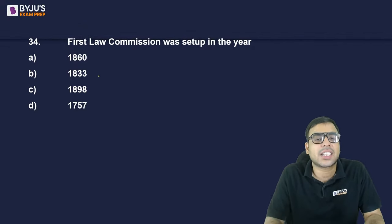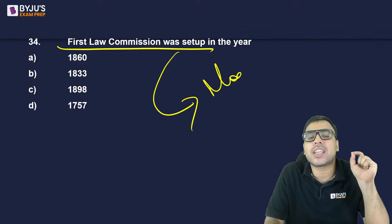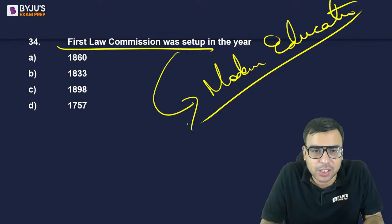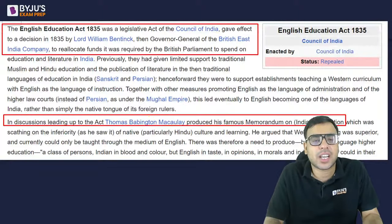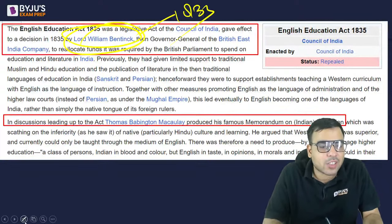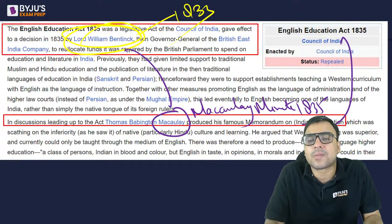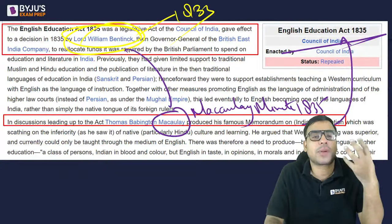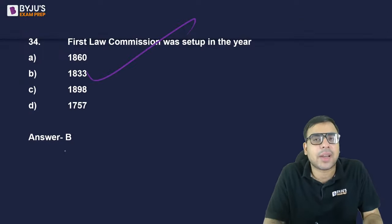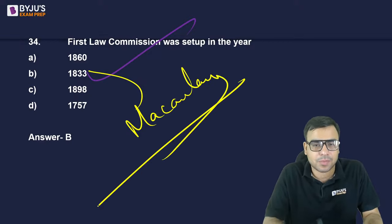The first law commission was set up in which year? 1860, 1833, 1898, or 1757? This was asked in a twist form — modern education in India is based on which of the following. The right answer is 1833 — B. It was the Macaulay Committee set up by Lord William Bentinck, who was Governor General of India. The Macaulay Committee of 1835 recommended that everything should be taught in English, forming the basis of the modern education system in India. The chairman of the first law commission was Thomas Babington Macaulay. B is the right answer.